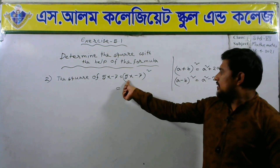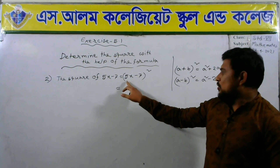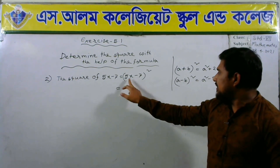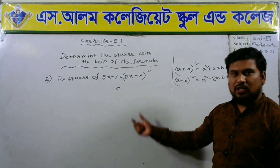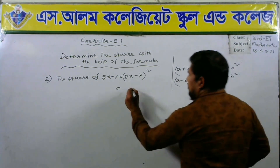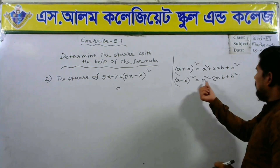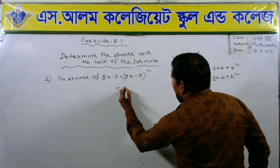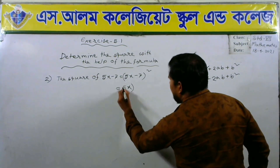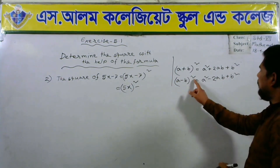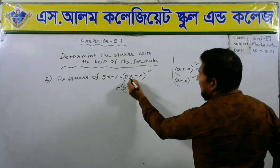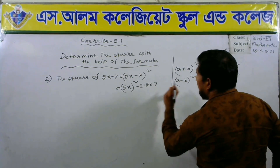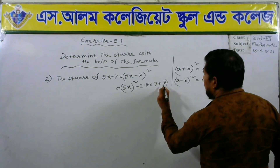Here students, suppose that 5x is a and 7 is b. So this is a minus b whole square. The formula of a minus b whole square: a minus b whole square equals to a square minus 2ab plus b square. So here we write a square means 5x whole square, minus 2 into 5x into 7, plus 7 whole square.